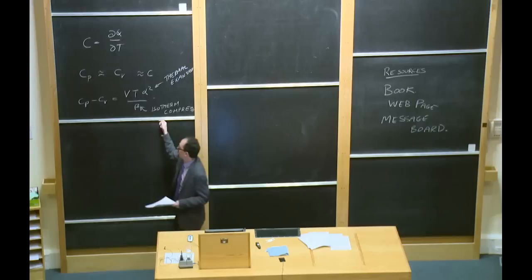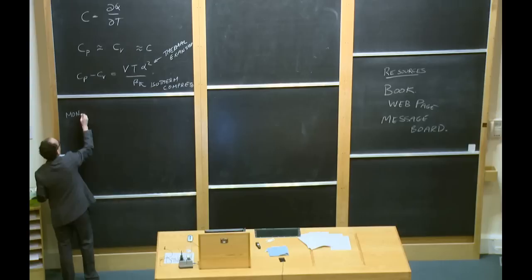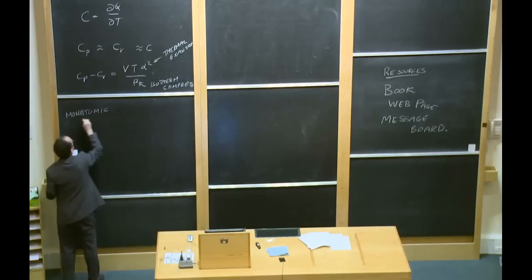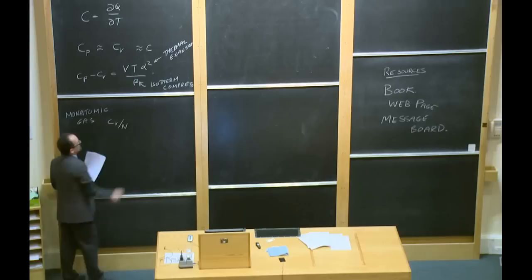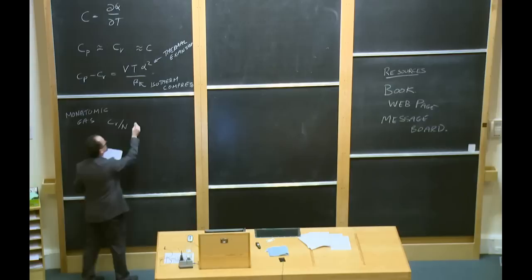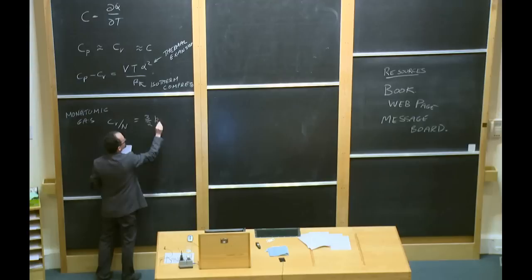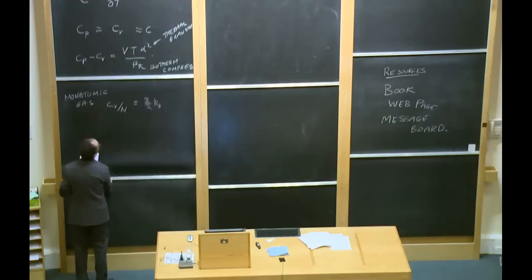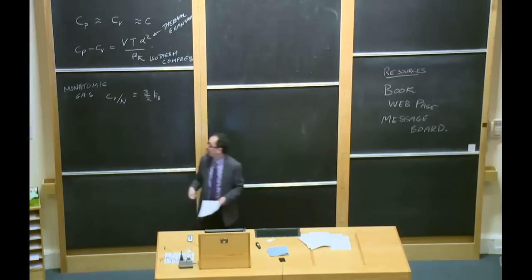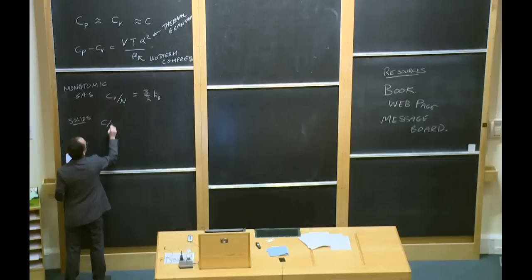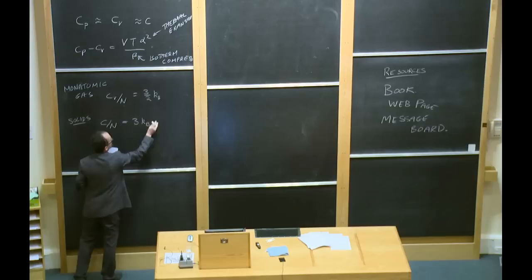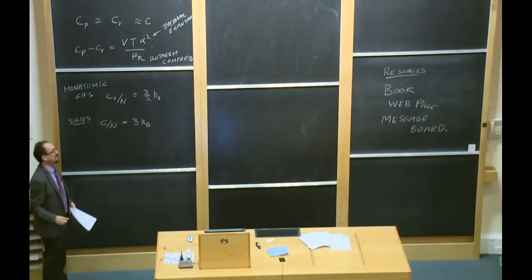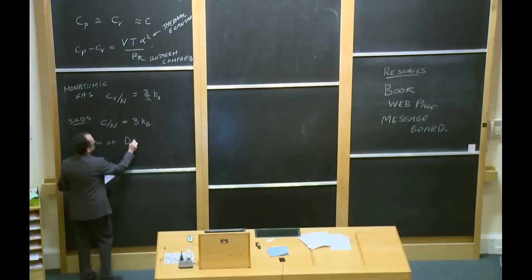Let's go back to gases. For a monatomic gas, C_v over N — the heat capacity per atom — was 3/2 k_B. It turns out there's a very similar law for solids: C over N equals 3 k_B. This law, that C/N is 3 k_B, is known as the Law of Dulong-Petit. Dulong and Petit were French chemists who discovered this law way back in 1819. All the way through the rest of the 1800s, almost to the very end, people knew about this law but they didn't know what caused it.